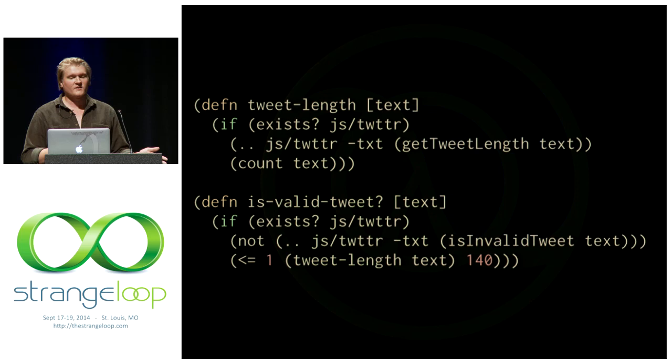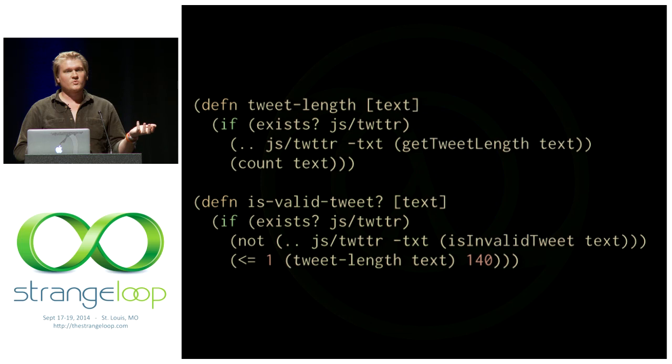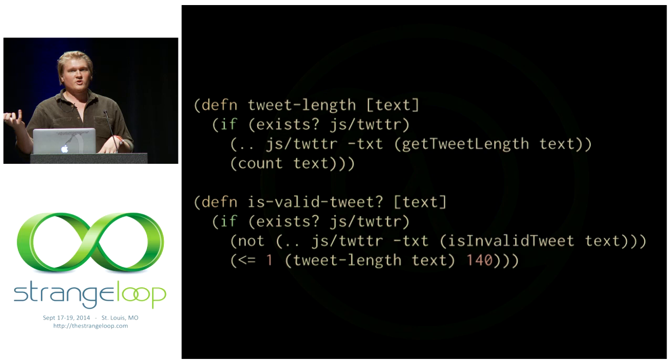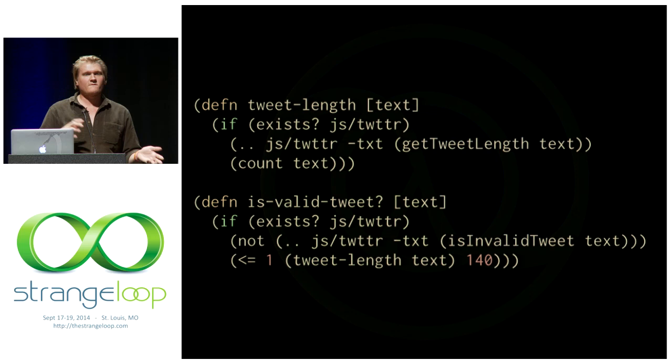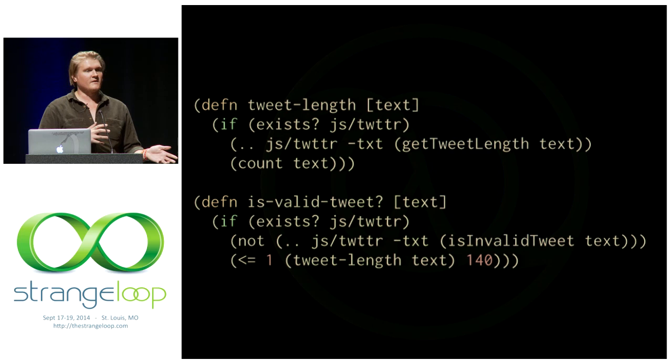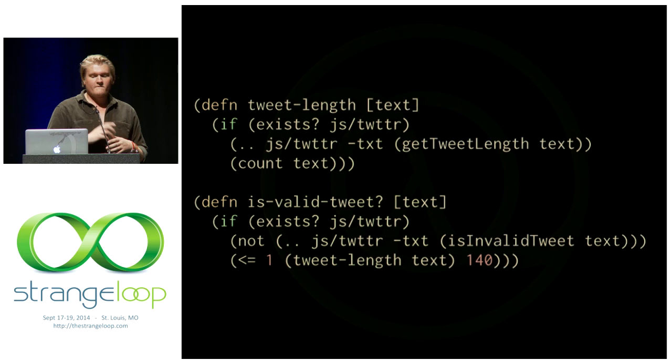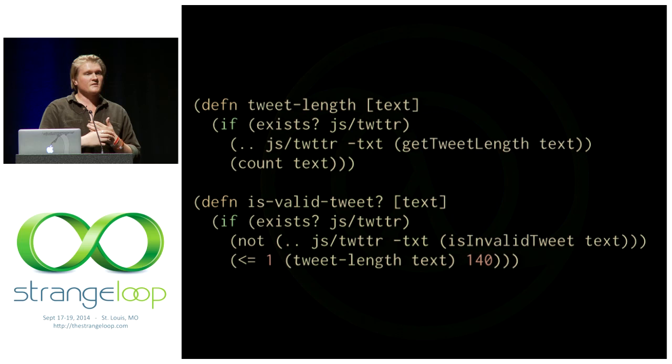We can do this without giving up any of the existing JavaScript ecosystem. For example, calculating the length of a tweet is actually kind of complicated because you have to determine what's actually a URL, and Twitter provides a really nice JavaScript library for doing a lot of this. We can import that JavaScript library very easily, so 99% of the code we write is still in ClojureScript and gives us all the benefits of that. But when we do need to use an existing JavaScript library, the interop is very simple.